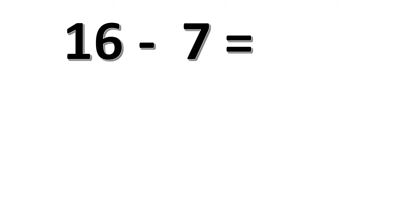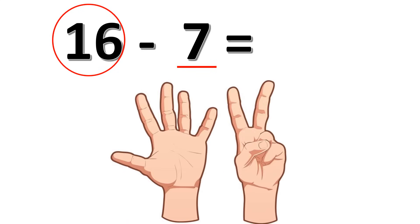Okay kids, for the third example, we're going to solve 16 minus 7. Which one is the bigger number here, 16 or 7? Yes, 16 is the bigger number. So we're going to start counting backward from 16, and 7 is the smallest number. So let's have 7 fingers up, kids. Start from 16, we're going to count backward: 16, 15, 14, 13, 12, 11, 10, 9. So 16 minus 7 is equal to 9.